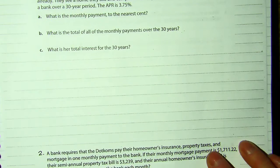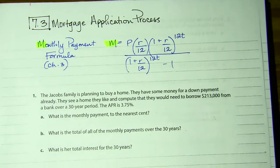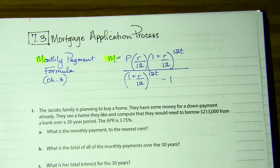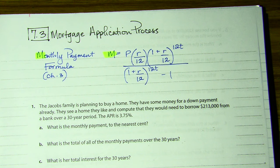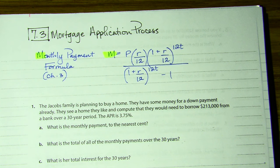Good afternoon. We're going to cover 7.3, the mortgage application process. So a little review — this formula is from Unit 3, but we are going to be using it again. It's the monthly payment formula, so it's how we would calculate our monthly credit card payment, our monthly mortgage bill, those sorts of things.